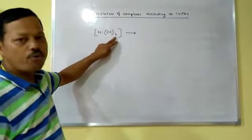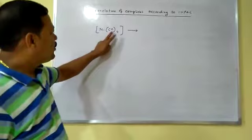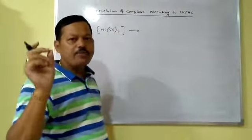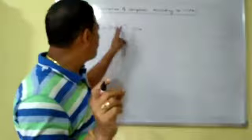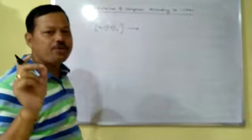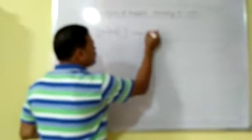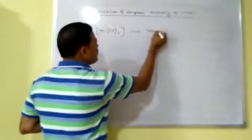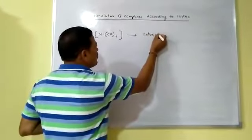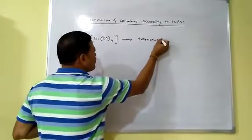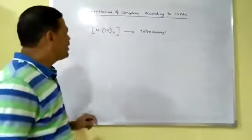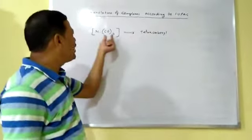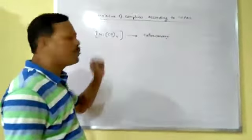How many carbonyl? Four. If 2 carbonyl are present, it is called dicarbonyl. If 3 carbonyl are present, it is called tricarbonyl. Here there are 4 carbonyl, that's why it is tetracarbonyl. So the name will be tetracarbonyl. This is about the ligand — first you write the name of the ligand: tetracarbonyl.